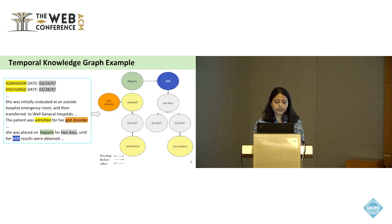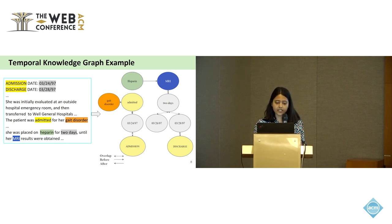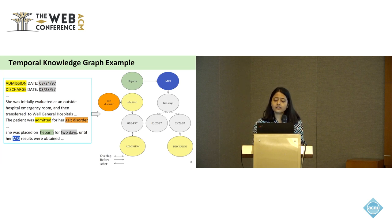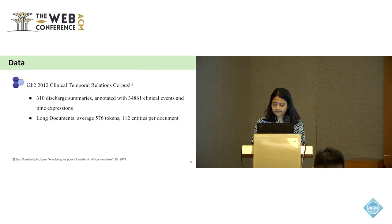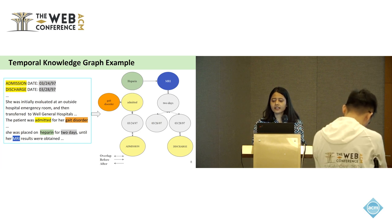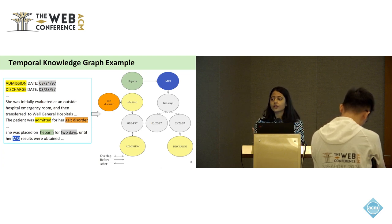Here's an example where we convert an unstructured snippet of clinical notes into a structured temporal knowledge graph. Gait disorder is a problem, heparin is a treatment, MRI is a test, and admission or discharge are occurrences. Directional edges represent before or after, and bidirectional edges represent overlap. We not only want our model to extract explicit temporal relations, but also implied ones through temporal transitivity or invertibility. For example, if event A occurs before B and B before C, we infer A also occurs before C. So gait disorder appears before admission, heparin and admission overlap, and heparin appears before MRI — meaning we can infer gait disorder also appears before MRI.